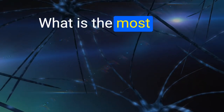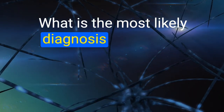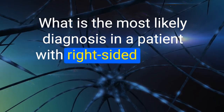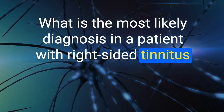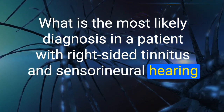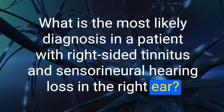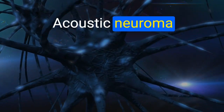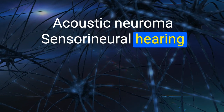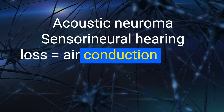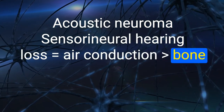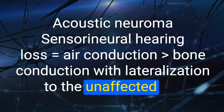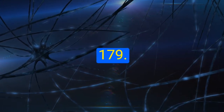178. What is the most likely diagnosis in a patient with right-sided tinnitus and sensorineural hearing loss in the right ear? Acoustic neuroma. Sensorineural hearing loss: air conduction greater than bone conduction with lateralization to the unaffected ear.